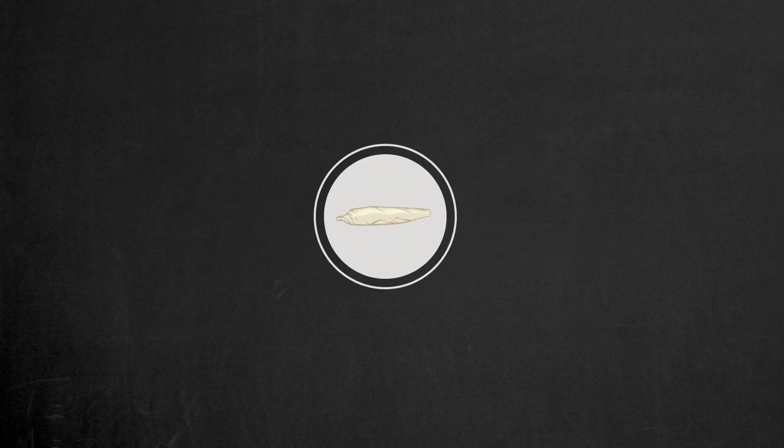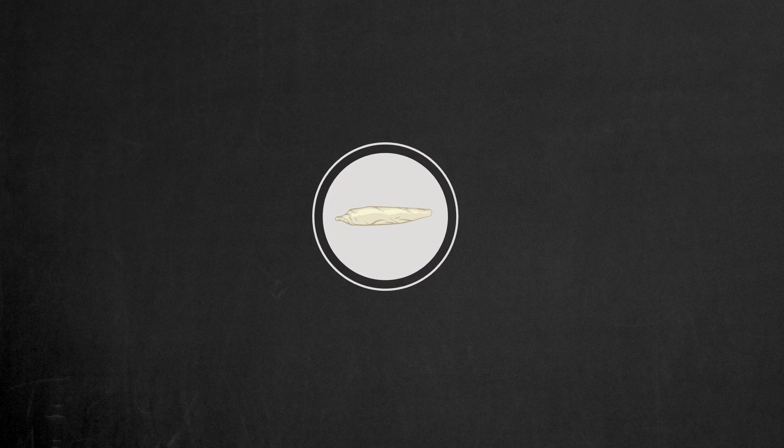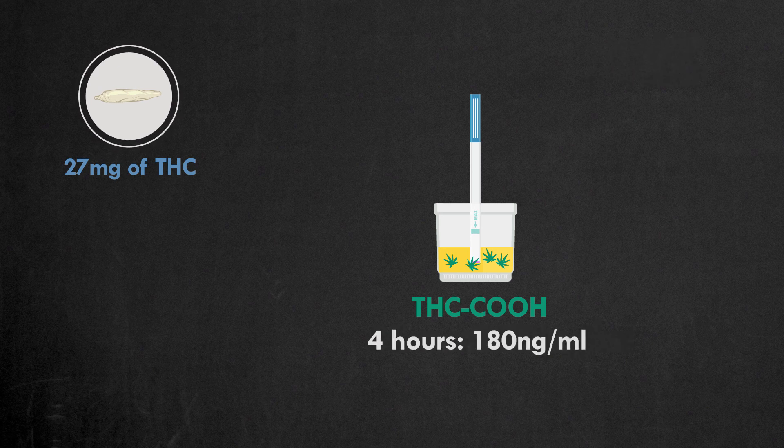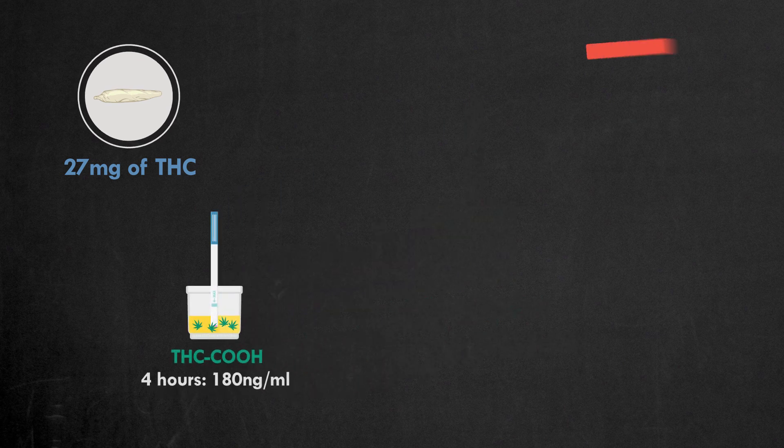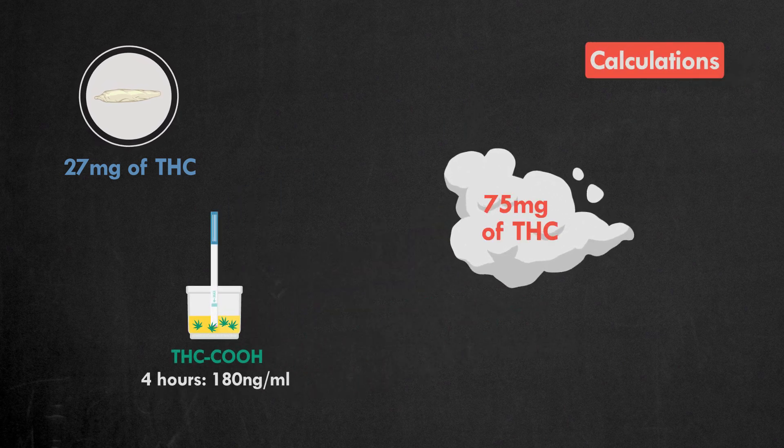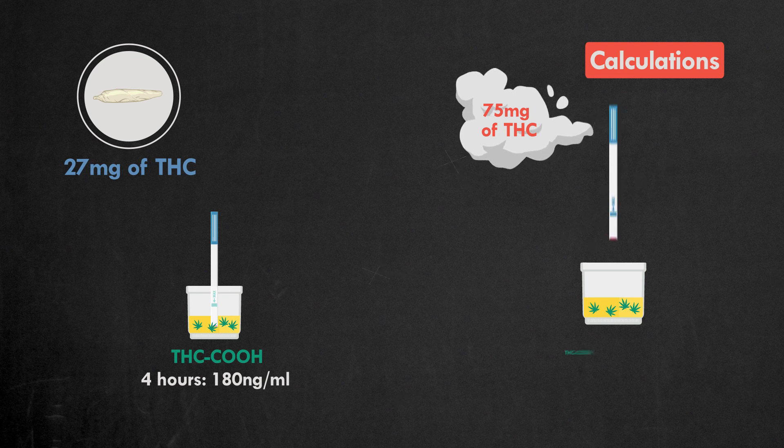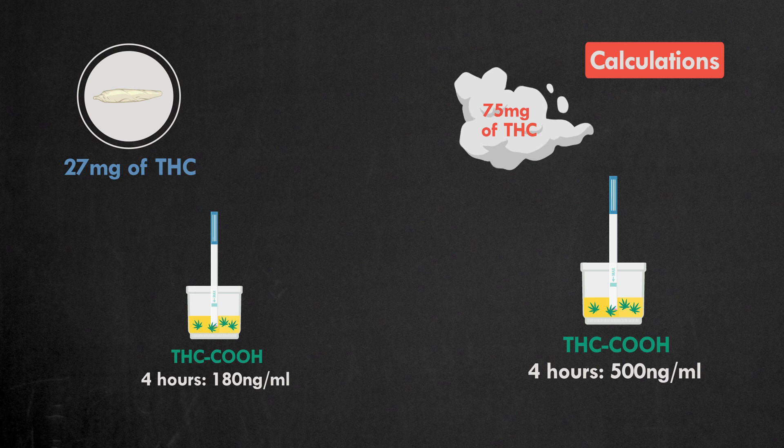According to a scientific study that will assist in our calculations, if there are 27 mg of THC in a joint, the amount of THC COOH in a smoker's urine will peak at 180 ng per ml after 4 hours. You inhaled 75 mg of THC, 50% of the original 150 mg as a second-hand smoker. This inhalation will result in 500 ng per ml concentration of THC in your urine after 4 hours.